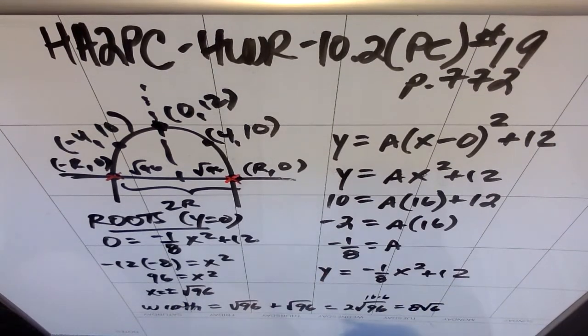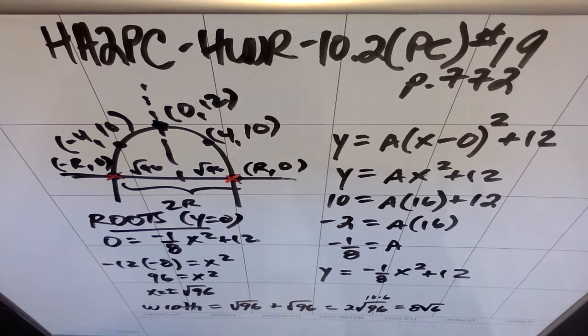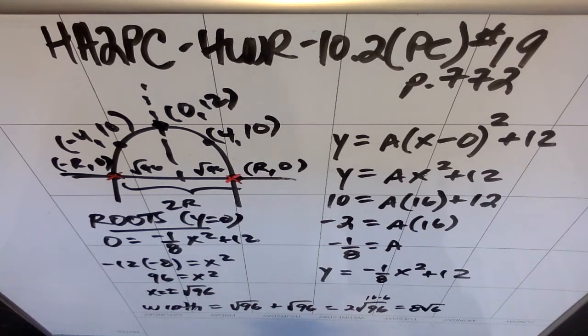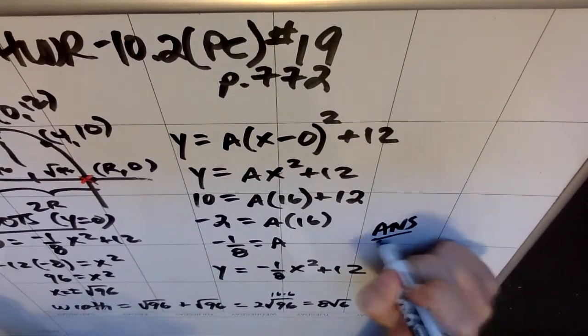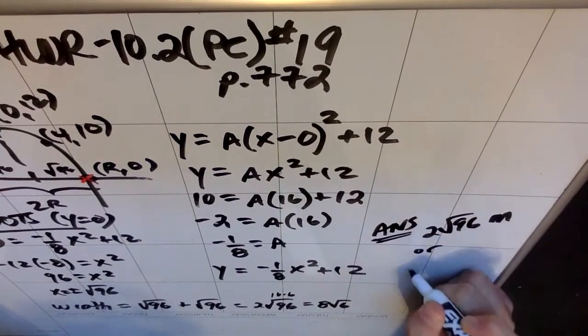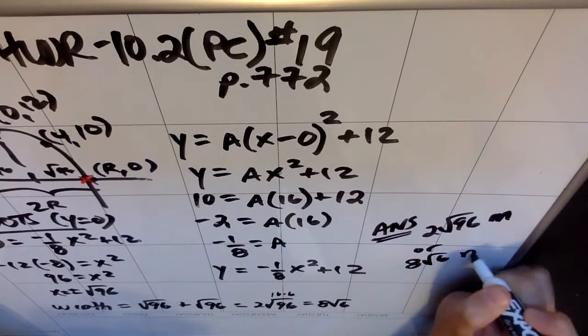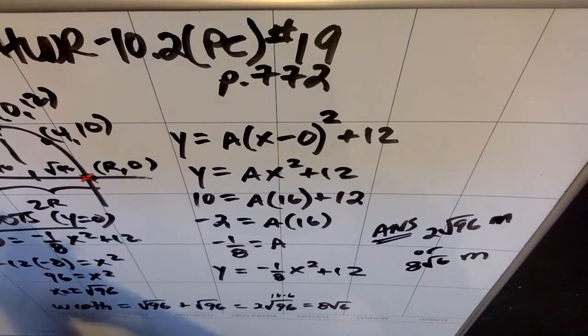but I'm not really sure why that would be useful because it is a word problem. Most of the time we answer word problems with a decimal. I would argue that technically speaking, the best answer I've got is either 2√96 meters or 8√6 meters, but I could see the argument that in a practical application, it would make more sense to find the width as a decimal.